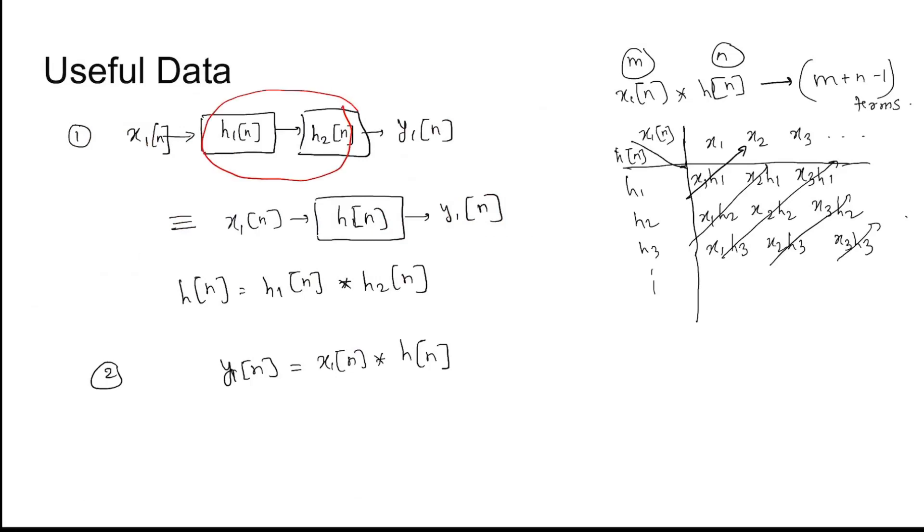Coming to the useful data, when you take a cascaded system with h1(n) and h2(n) as the impulse responses for these systems, then the overall cascaded system impulse response h(n) is h1(n) convolution h2(n), and the output y(n) is the convolution between input x(n) and the overall impulse response h(n).